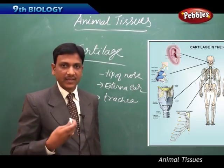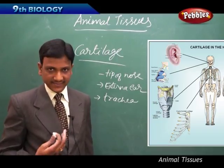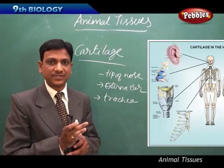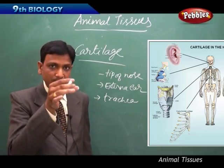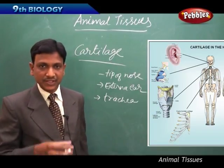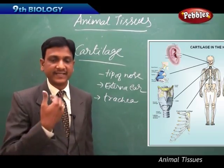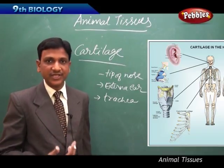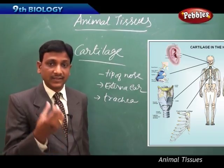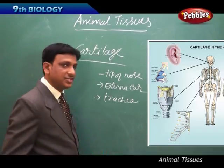Our windpipe has C-shaped cartilaginous rings. If those cartilaginous rings are not there, the windpipe gets collapsed and we cannot breathe in or breathe out. The windpipe needs some support to keep it open always. Because the pressure changes when we inhale and exhale, there is a chance of trachea collapsing. The trachea is supported by C-shaped cartilaginous rings.